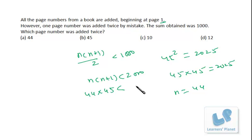44 into 45 will be less than 2000, so we have to find out the sum of first 44 natural numbers. The sum is 44 into 45 by 2, that is 990.